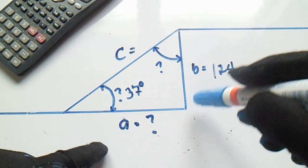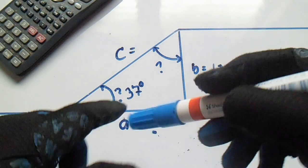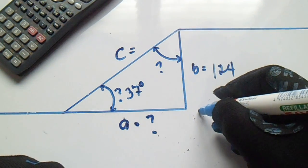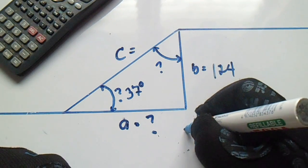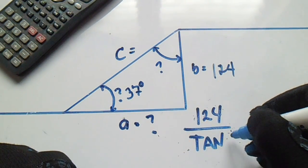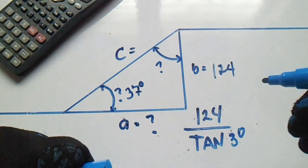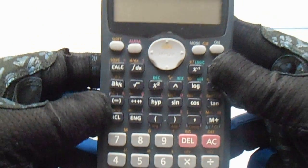So we will find first this A. Okay, for the formula of A, yes, 124 divided by tan 37 degrees. We will compute it with this calculator.